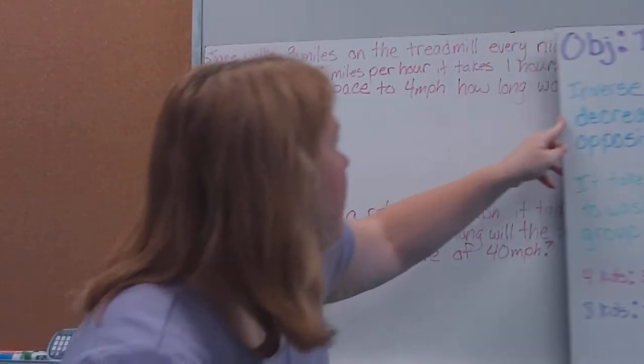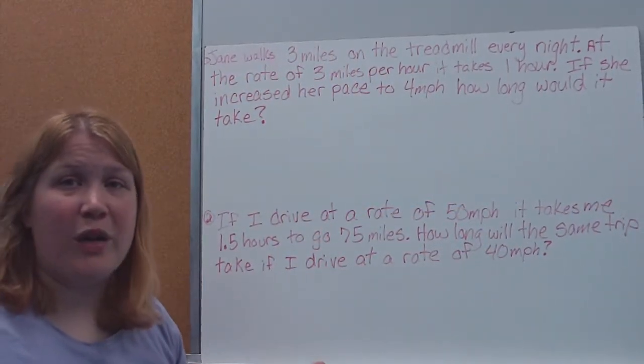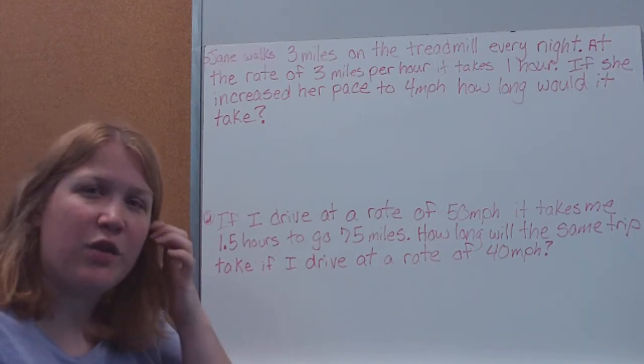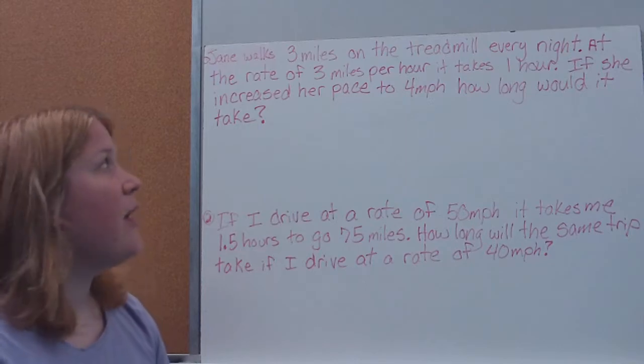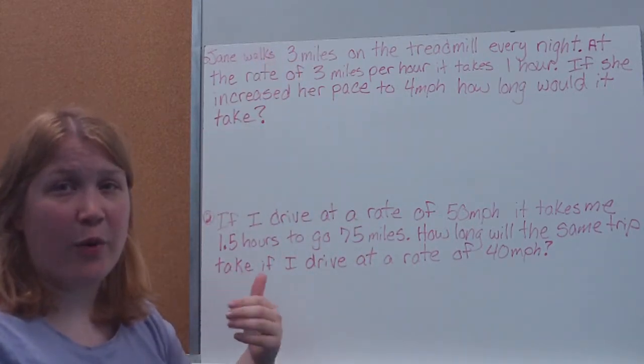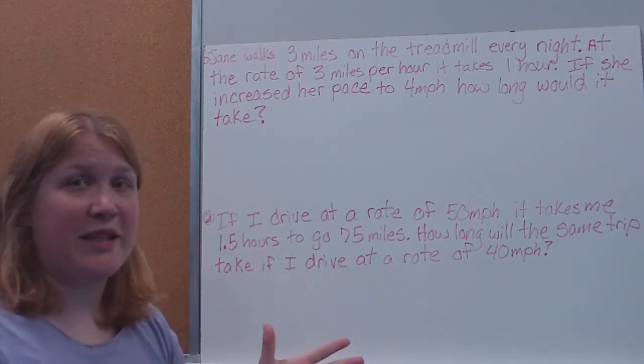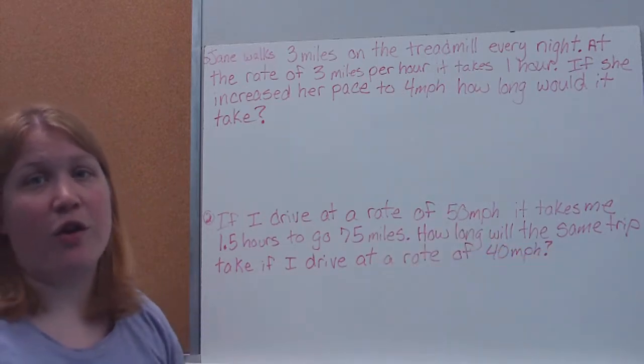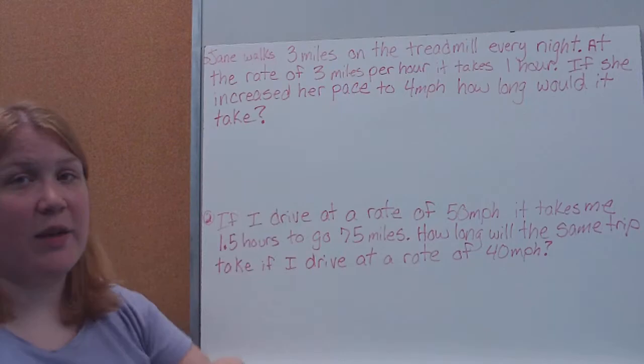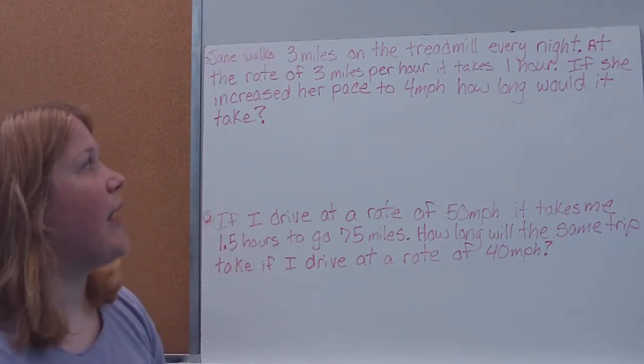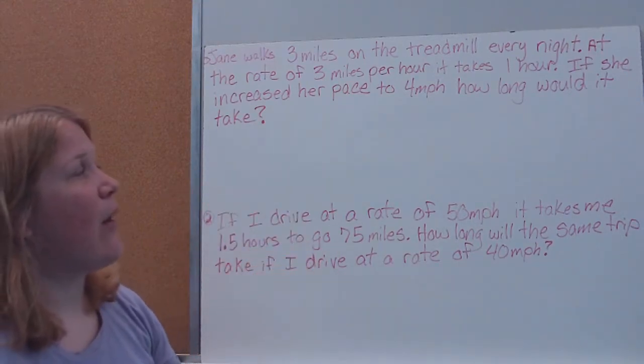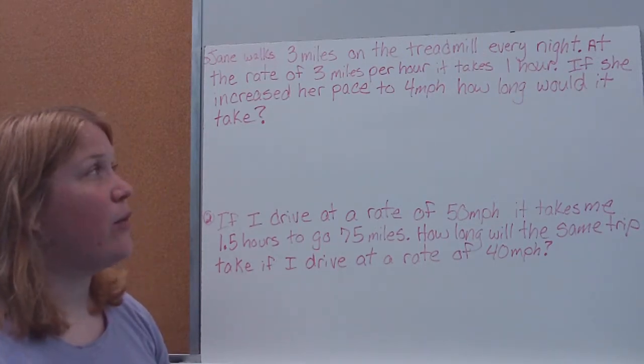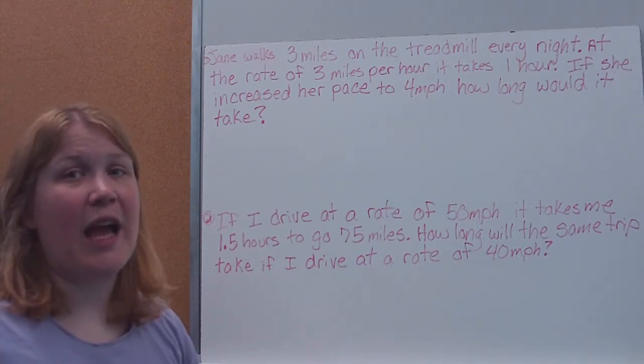So, we're going to do a few more of these here. And, again, these generally come at you in word problems. Okay. So, Jane walks three miles on the treadmill every night. And what you'll notice is there's usually some information that you don't necessarily need when you're setting up your inverse proportions. For example, the distance she walks isn't going to make a difference to how I'm going to solve this problem. That's just telling me that she's going the same distance regardless. So, inverse proportions, we're talking about dealing with the same amount of some things. For example, we still had 10 cars in that first problem, even though there was more kids. So, here we're still dealing with the same distance. The only thing that's going to change is how fast she's going to walk it. So, if she walks at a rate of three miles per hour, it takes her one hour. So, if she increases her pace to four miles per hour, how long would it take?